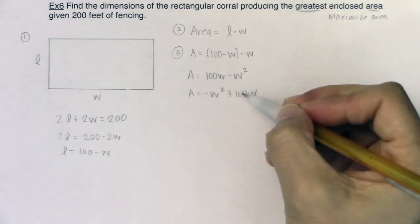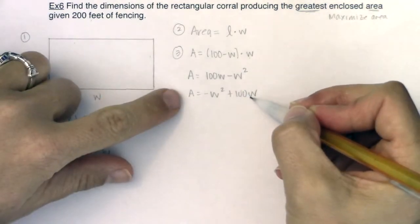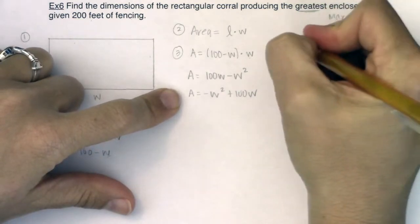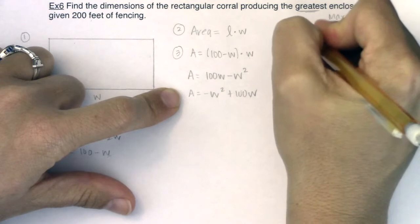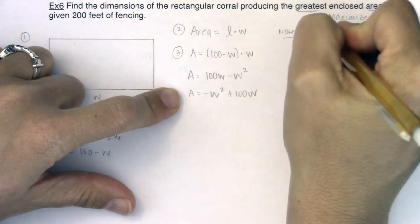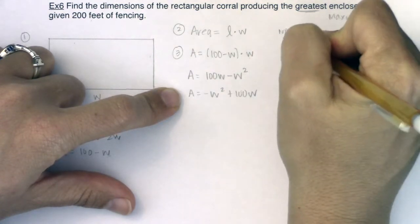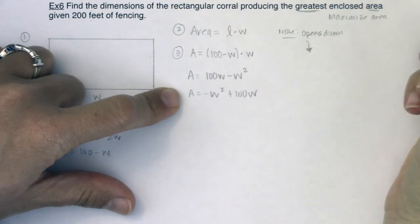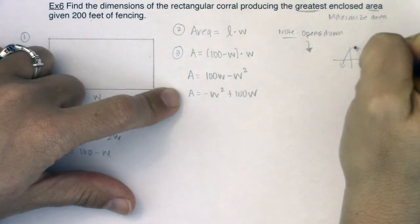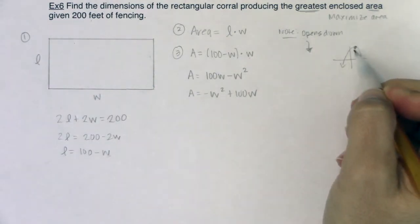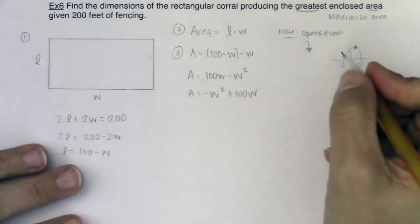I just want you to see that I have a downward facing parabola. So this opens down, which tells me I will have a maximum. If I have a downward facing parabola, I'm definitely going to have a high point. So I'm going to be able to maximize my area.